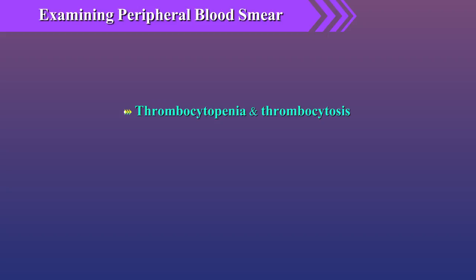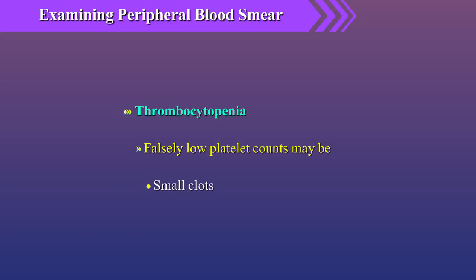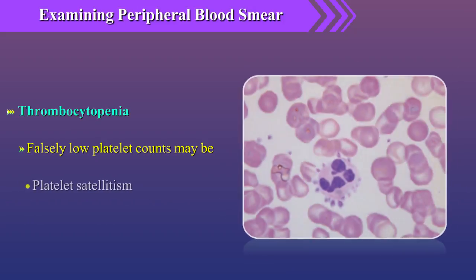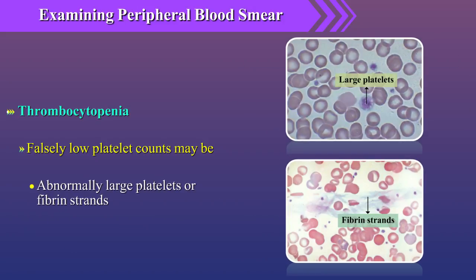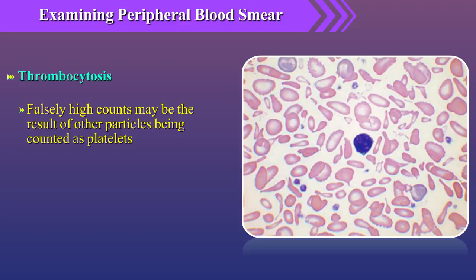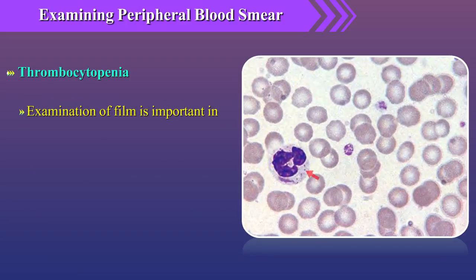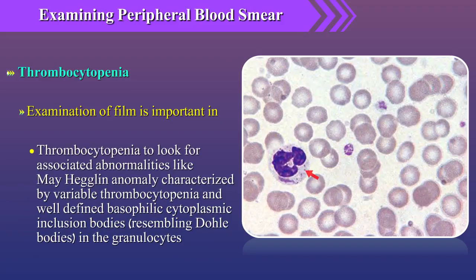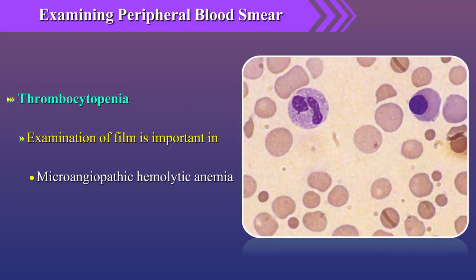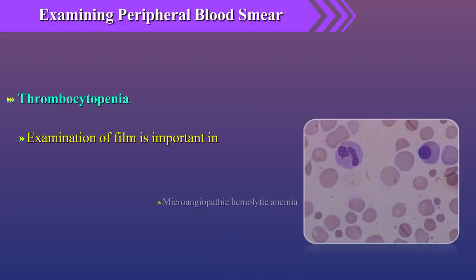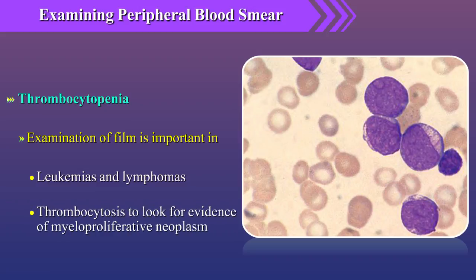Regarding thrombocytopenia and thrombocytosis, falsely low platelet counts may result from small clots, platelet clumping, platelet satellitism, abnormally large platelets, or fibrin strands. Falsely high platelet counts may result from other particles like RBC fragments, fragments of leukemic cells, or fungi being counted as platelets. Examination of the film is also important in thrombocytopenia to look for associated abnormalities like May-Hegglin anomaly with WBC inclusions, microangiopathic hemolytic anemia, leukemias and lymphomas with atypical cells, and in thrombocytosis to look for evidence of myeloproliferative neoplasm like basophilia.